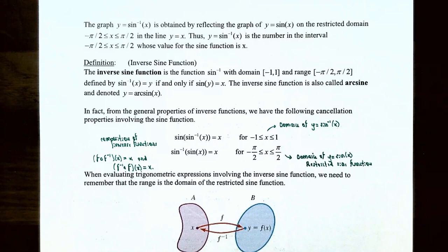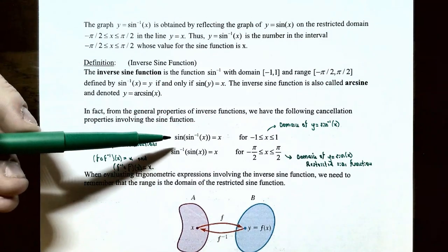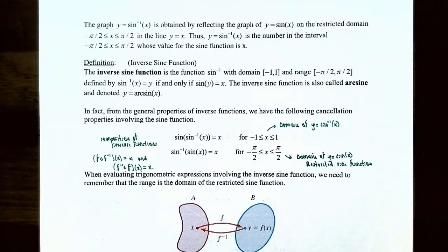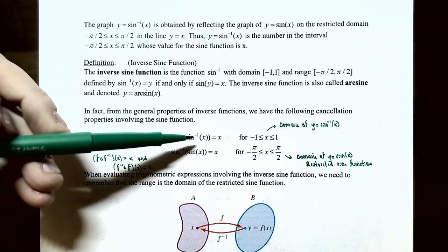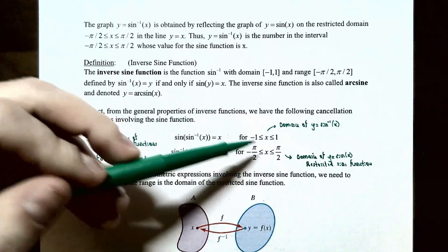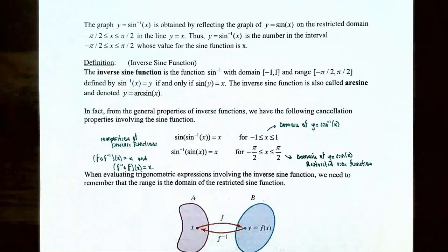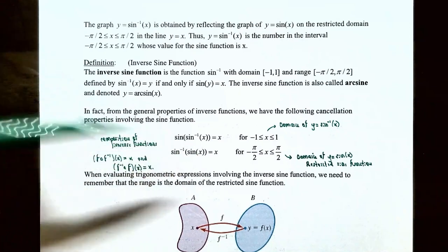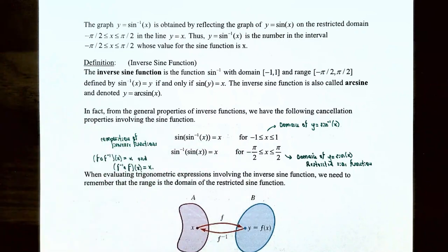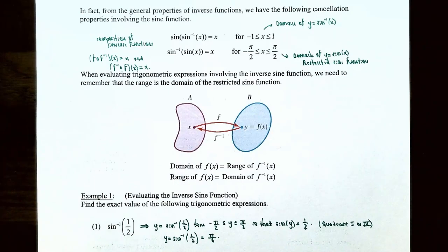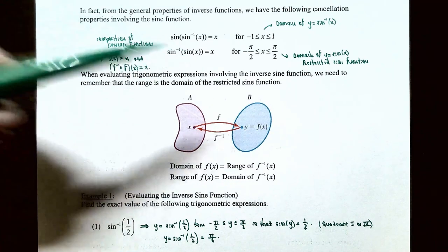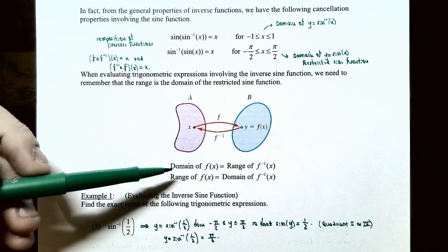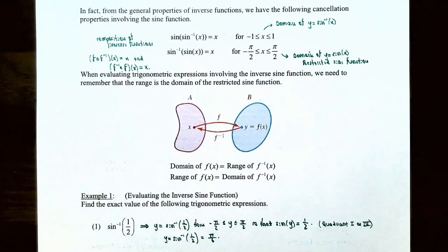From the general properties of inverse functions, we have cancellation properties involving the sine function. sin(sin⁻¹(x)) = x for all x in [−1, 1], which is the domain of the inverse sine function. On the other hand, sin⁻¹(sin(x)) = x for all x in [−π/2, π/2], the domain of the restricted sine function. Whenever evaluating trigonometric expressions involving the inverse sine function, keep in mind that the range is the domain of the restricted sine function.